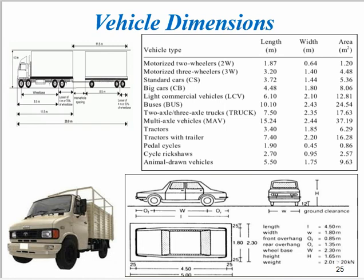This information can be visualized from the table for the motorized three-wheeler, standardized car, big car, light commercial vehicle (LCV), bus, two-axle and three-axle trucks, multi-axle vehicles (MAV), tractors, tractors with trailers, pedal cycles, cycle rickshaws, animal drawn vehicles, etc.